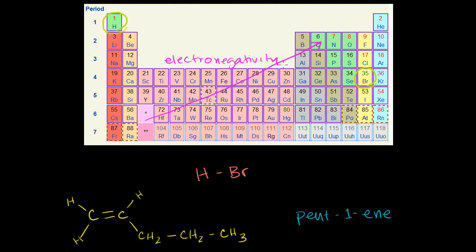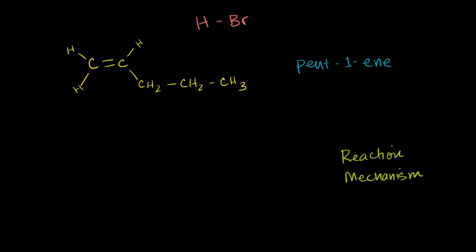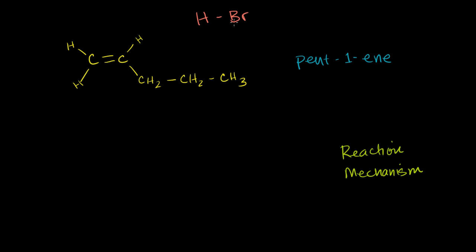And just as a refresher, electronegativity just means the tendency for that atom to hog electrons. So you see bromine over here, hydrogen over there. Bromine is much more electronegative than hydrogen. So in a hydrogen bromide molecule right here, the bromine part of it is going to hog the electrons. So you're going to have a partial negative charge at the bromine end and a partial positive end at the hydrogen end.